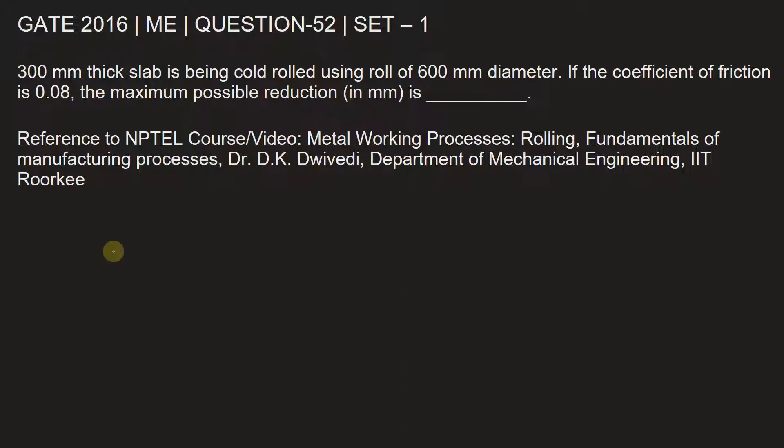Now for rolling, the maximum possible reduction in mm is given by coefficient of friction μ² times the radius of the roller R.